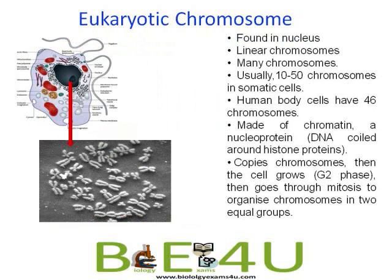Now let us have a look at the eukaryotic chromosome. The eukaryotic system is very complex. The genetic material DNA is surrounded by a nuclear membrane — it has a true nucleus — so the DNA is found inside the nucleus. The chromosomes are linear. There are multiple chromosomes; most often 10 to 50 chromosomes in body cells. As we all know, human body cells have 46 chromosomes.